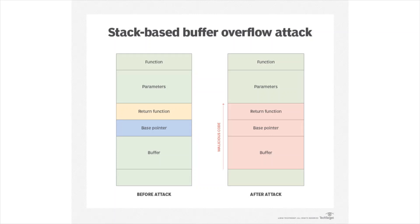If we look at the second image, which shows what happens when we overflow the buffer, we are changing the return address of the function. This means that the function will not return where it was supposed to. What the attacker will do is change the return address to something pointing to malicious code.